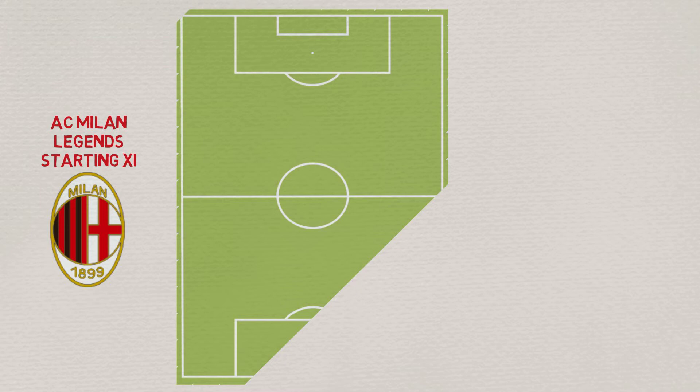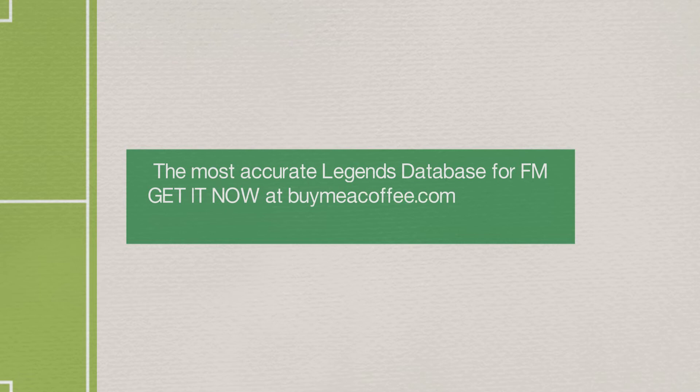In this video we take a look at the starting 11 of the Milan legends in the FML database, which currently covers the period between 1960 and 2021. We have chosen the manager and the 11 players considering the importance for the club — the number of appearances, the goals scored, as well as the number of major trophies won with the club. You can manage the AC Milan legends and many other legendary teams by downloading the FM21 legends database at buymeacoffee.com/fmlegends.